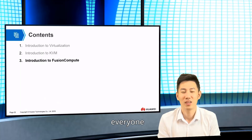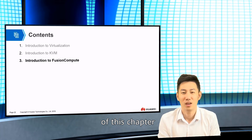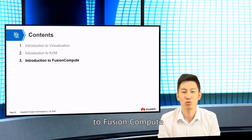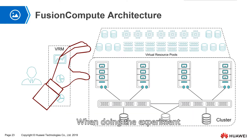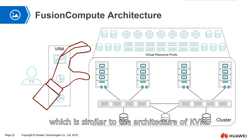Okay everyone, we have finished the first two subsections of this chapter. Next, I will make an introduction to Fusion Compute. When doing the experiment, we use Fusion Compute as a carrier. Let's take a look at the architecture of Fusion Compute, which is similar to the architecture of KVM. It also has a management tool and a virtualization product. The management tool for Fusion Compute is VRM.